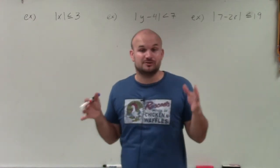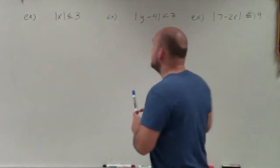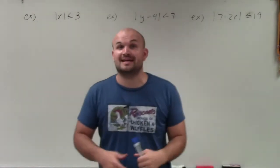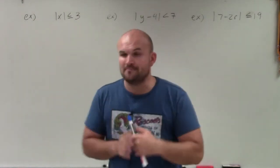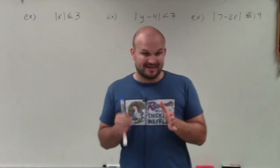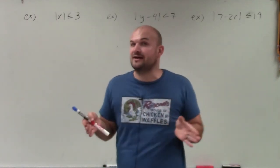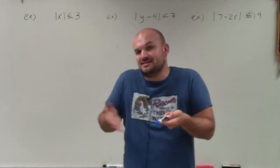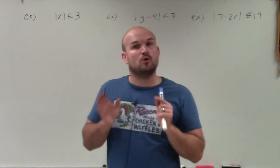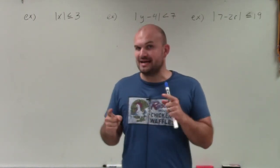We can only create our two cases when our absolute values are isolated on one side of the inequality. In this case, our absolute values are isolated, so that is good. When we create our two cases, we create the positive and our negative solution — basically multiplying by negative one to negate one side. But remember, when we negate inequalities, we've got to make sure we flip the sign.